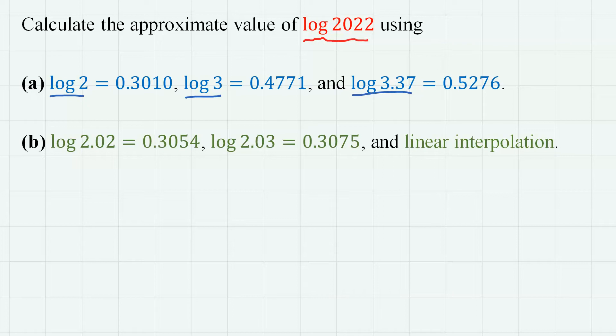In the second problem, log 2.02 and log 2.03 are given, and we are going to use linear interpolation to find the approximate logarithm value between 2.02 and 2.03.